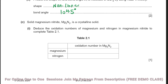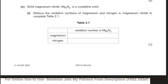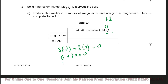Deduce the oxidation numbers of magnesium and nitrogen in magnesium nitride, Mg3N2. Magnesium is in group 2, so its oxidation number is +2. The overall charge of the compound is zero: 3(+2) + 2x = 0, so 6 + 2x = 0, giving x = −3. Therefore magnesium is +2 and nitrogen is −3.